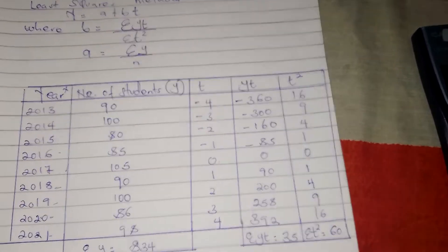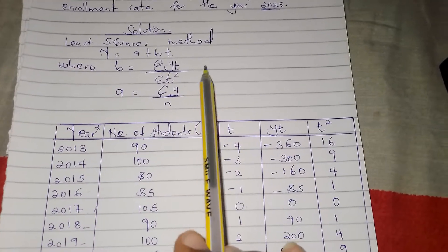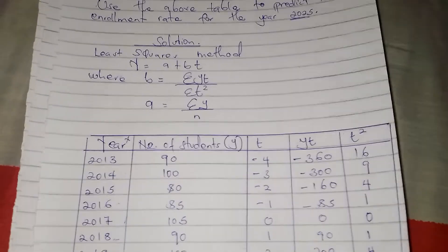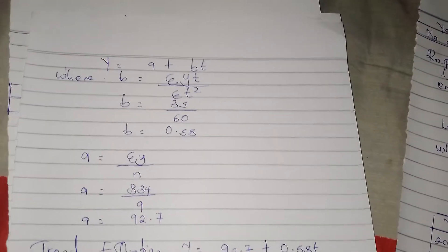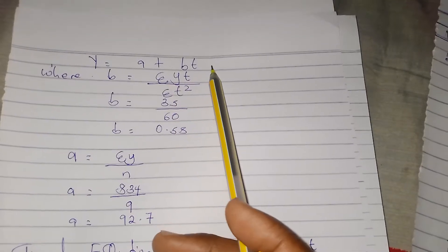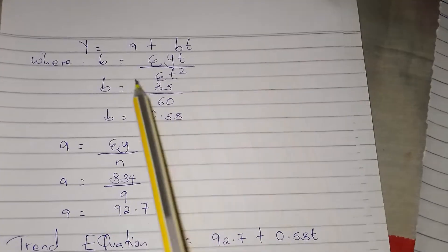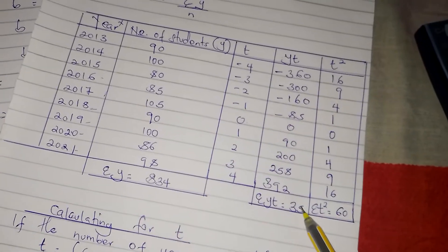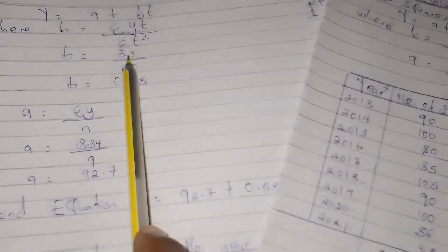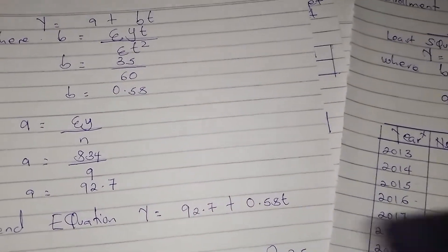The next step is to substitute into our formula to get the values of b and a. Our equation is y equals a plus bt, whereby b equals summation yt over summation t squared. From our table, summation yt is 35 and summation t squared is 60, so b equals 35 divided by 60.